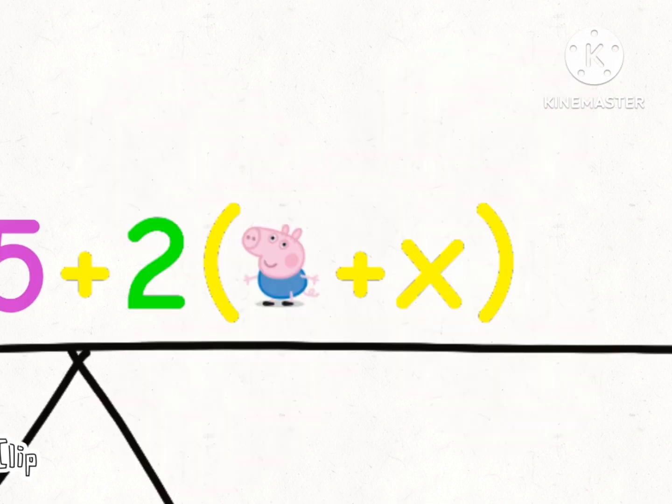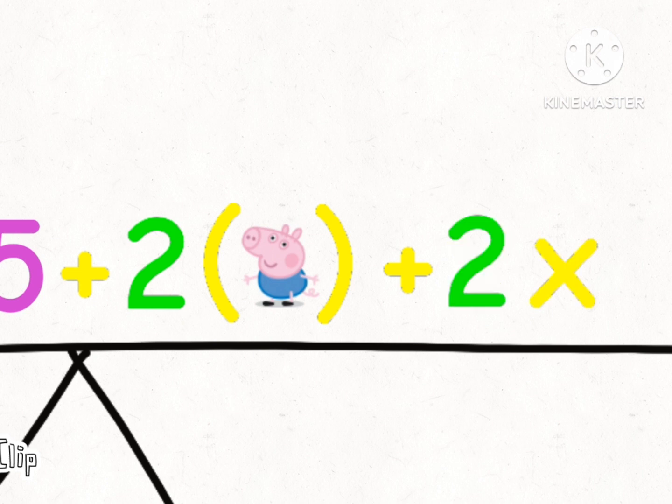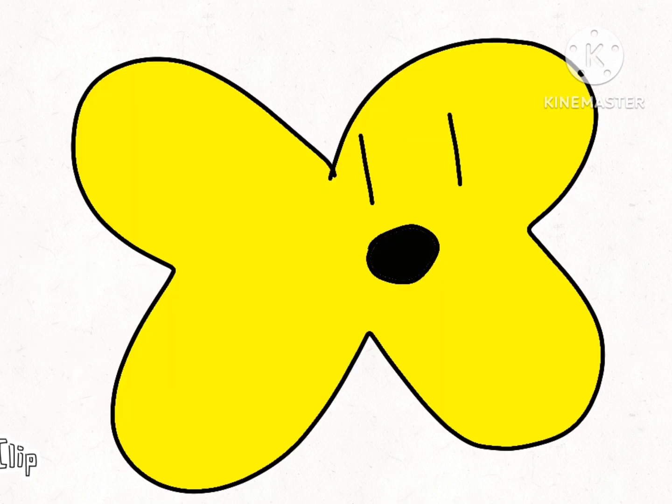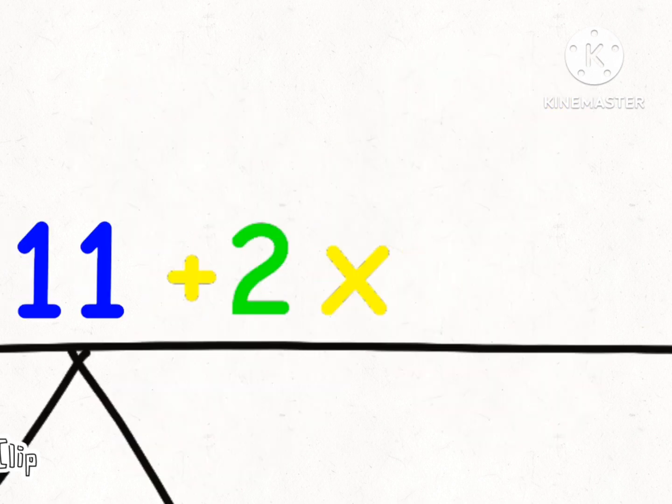Okay. See the two times three plus x? Yeah. That's the same as two times three plus two times x, which is six plus two x. Oh! And five plus six is eleven.